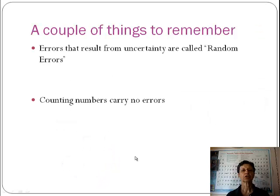Finally, there are a couple of things you need to remember. Errors that result from uncertainty are called random errors. There are other errors called systematic errors. But for now, all you need to remember is that these errors that result from uncertainty are called random errors.